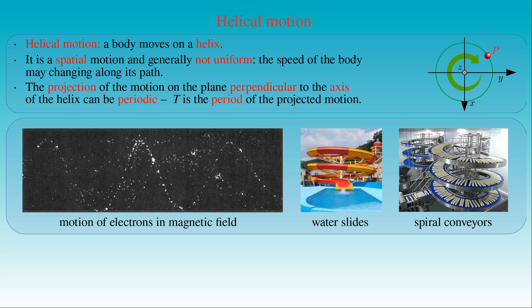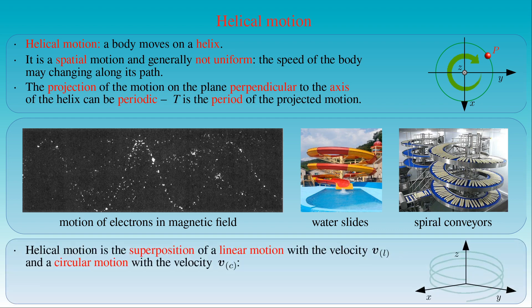The projection of a helix on the plane perpendicular to its axis gives a circle. Therefore helical motion is the superposition of a linear motion parallel with the axis of the helix and a circular motion in the plane perpendicular to the axis. We can denote the velocity of the linear motion by VL, and the velocity along the circle in the plane perpendicular to the axis of the helix by VC. The velocity V of the body traveling on the helix is the vector sum of VL and VC, which determines the instantaneous direction and speed of the motion along its trajectory.